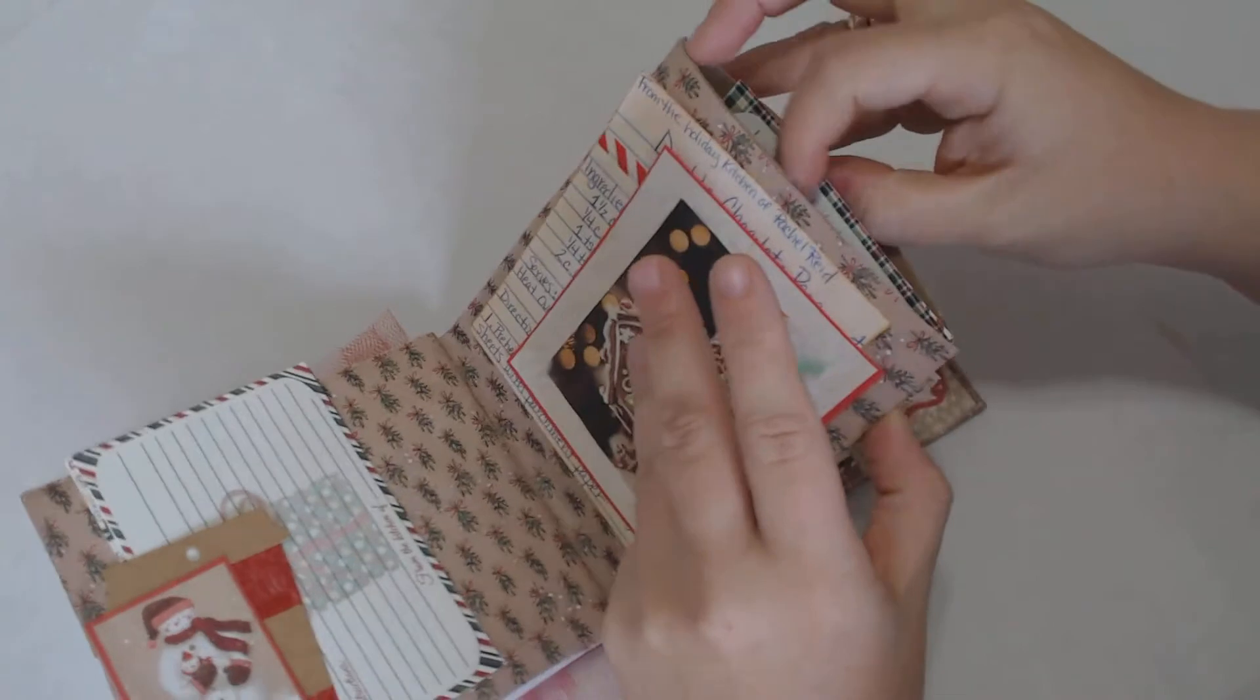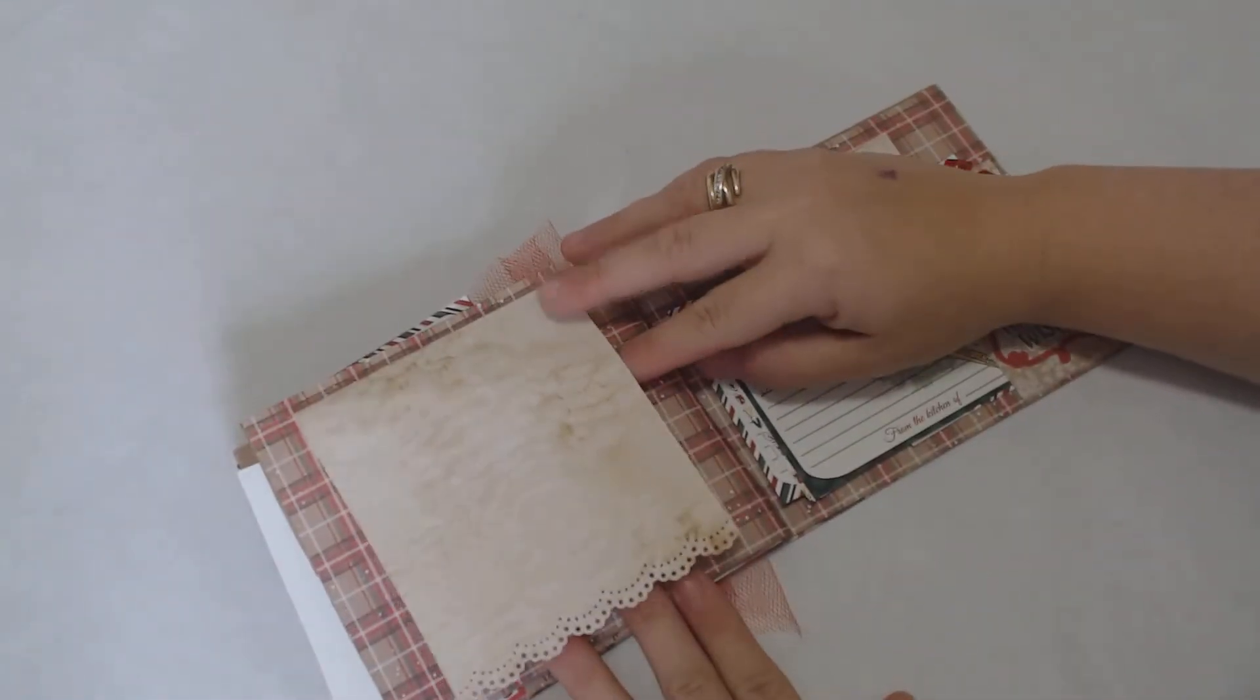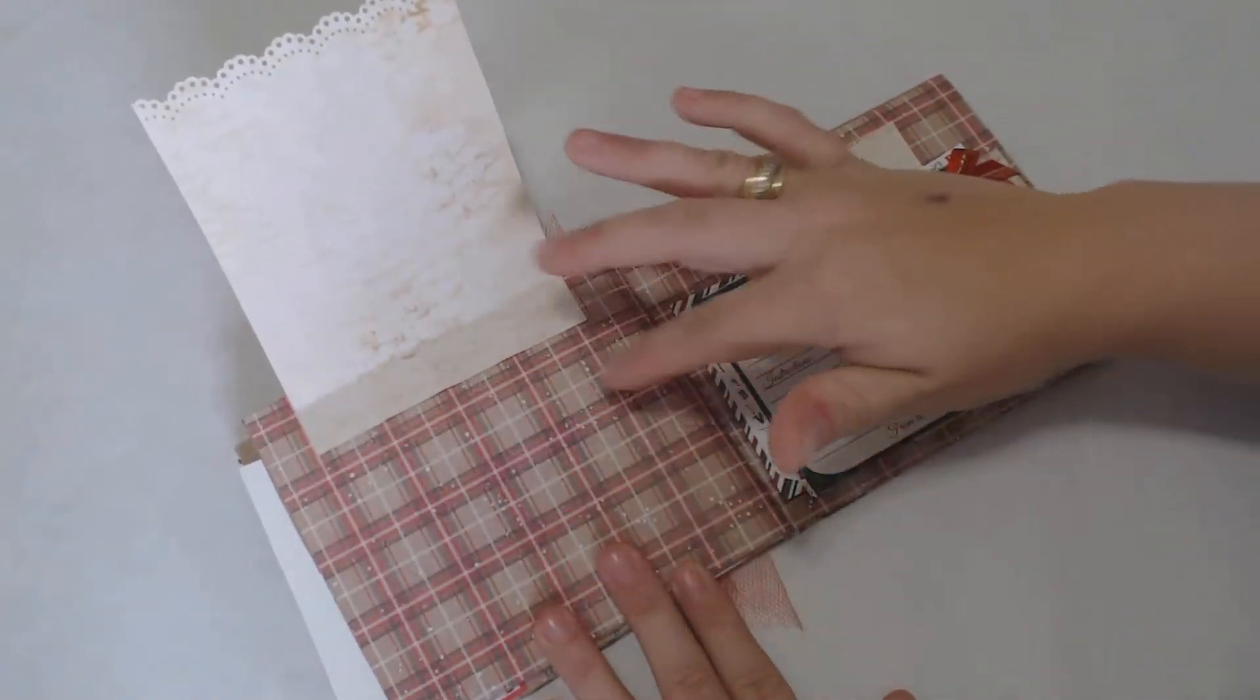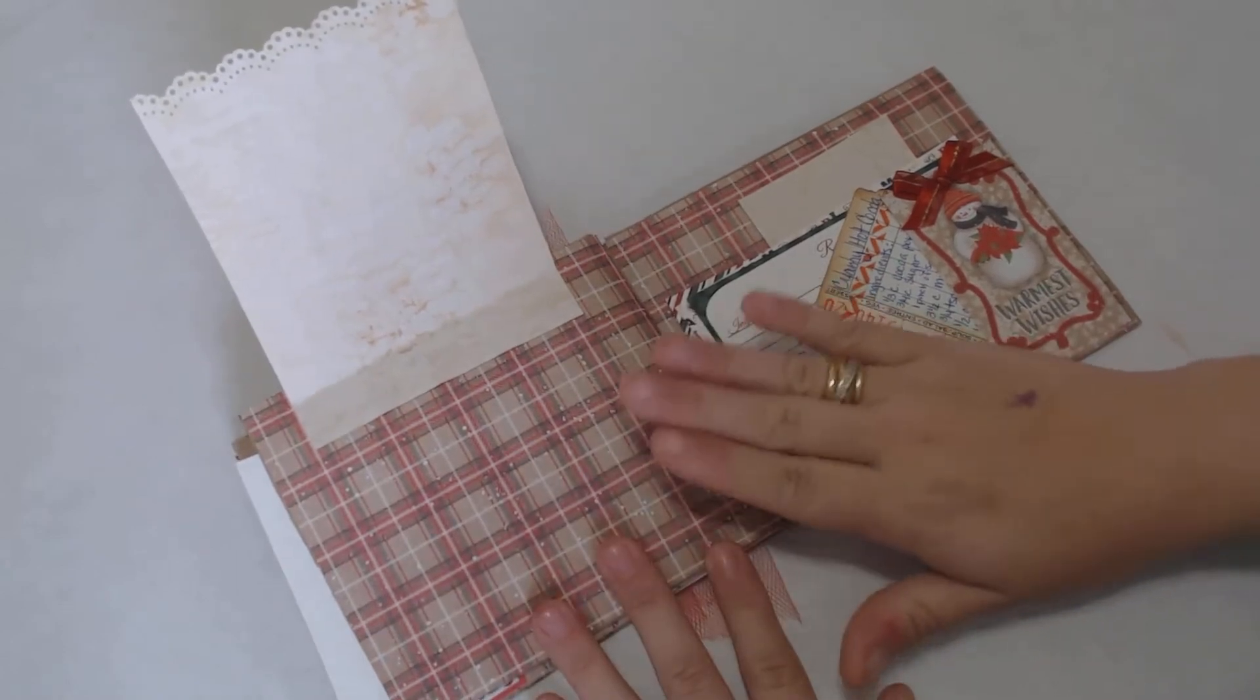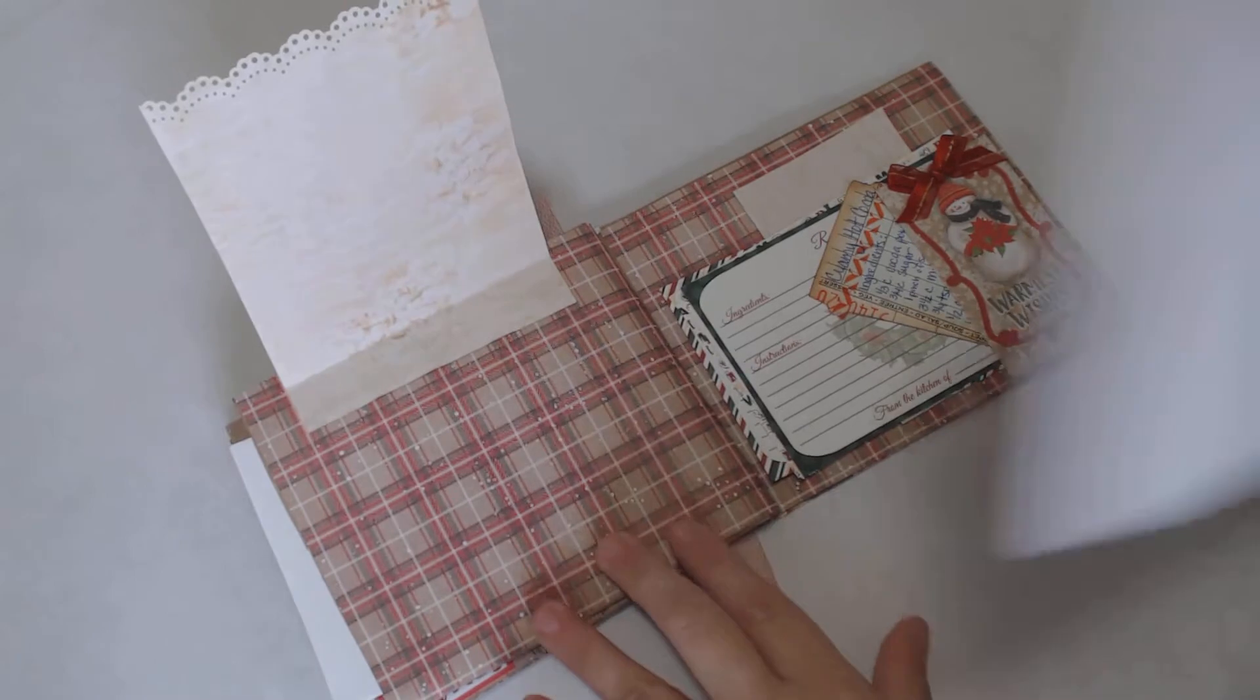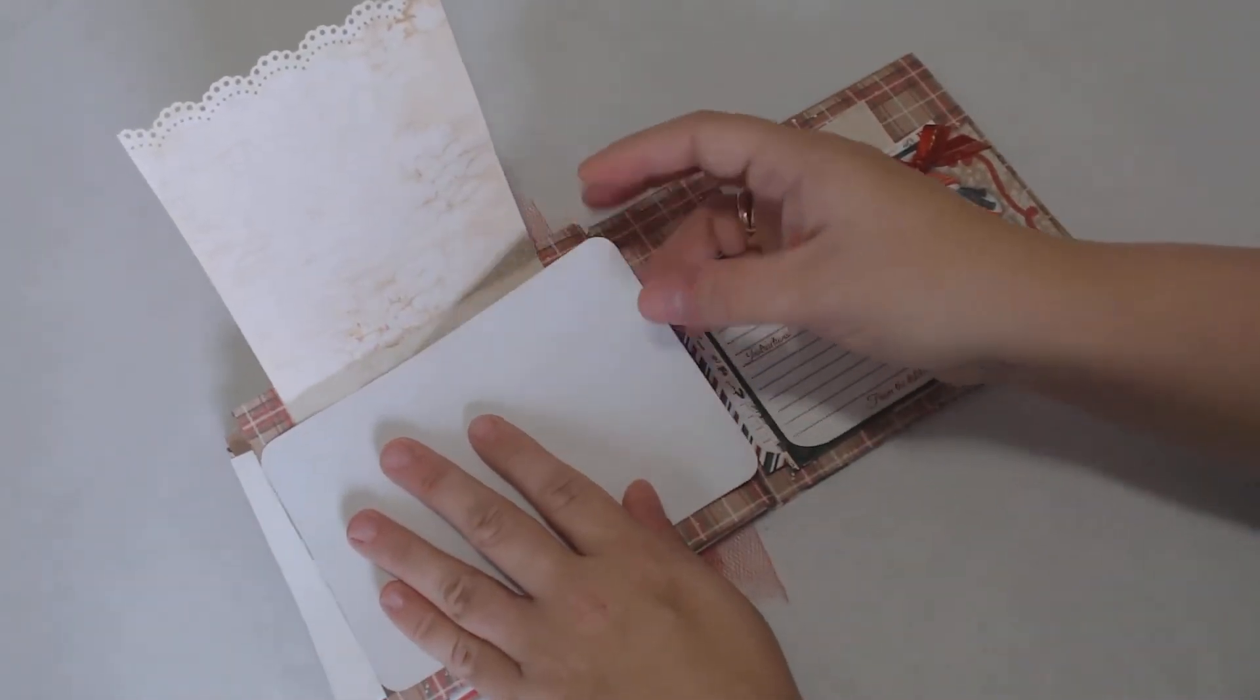Once again, here's another little tuck spot. Here's a spot where you could write a recipe here. Maybe take a picture of the cookies or whatever it is you made, your first holiday dinner, and put it on here. There's enough room to do that. You can put a four by six picture right there.